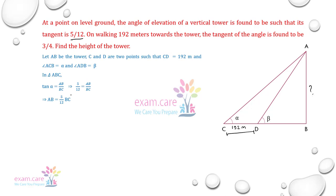तो AB is equal to 5 by 12 BC। Next जो right angle triangle हमारे पास है वो ABD है। उस triangle में tan beta is equal to AB by BD। और tangent change हो के 3 by 4 हो गया। तो 3 by 4 is equal to 5 by 12 BC by BD, क्योंकि AB की जगह हम लोग 5 by 12 BC लिख दिए।